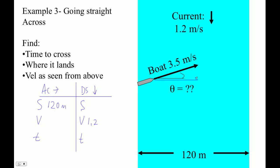So let's draw this thing. It's going to be pointed upstream like this, and there's going to be this upstream component there. 1.2 plus that component — if we head straight across, isn't our displacement going to be zero? So these have to add to zero. This means the upstream component has to be 1.2 meters per second. Remember, downstream is positive, so the river's current is positive 1.2, and this component is negative 1.2.